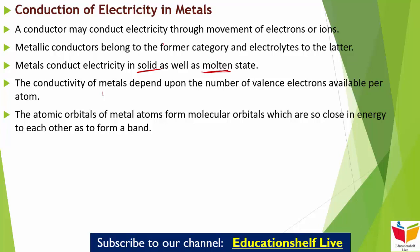Now the conductivity of metals depends upon the number of valence electrons available per atom. The atomic orbitals of metal atoms form molecular orbitals which are so close in energy to each other as to form a band. If this band is partially filled or if it overlaps with a higher energy unoccupied conduction band, then electrons will easily flow when we apply an electric field, and we will see conductivity.